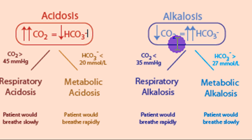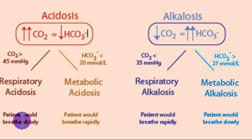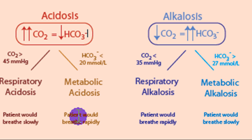We can also differentiate respiratory from metabolic acidosis by asking: is the respiratory system doing what it's supposed to be doing, given the CO2 levels accompanying the change in acid? In acidosis, we expect high CO2, so we expect the patient to breathe rapidly to rid excess CO2. If the patient is breathing slowly during acidosis, the respiratory system is not doing its job — it is the problem, so this is respiratory acidosis. If the patient is breathing rapidly during acidosis, the respiratory system is acting correctly, coping with a problem from somewhere else — so this is metabolic acidosis.